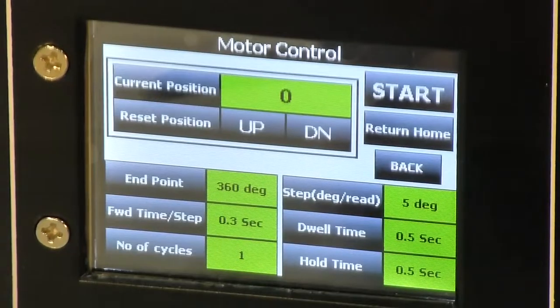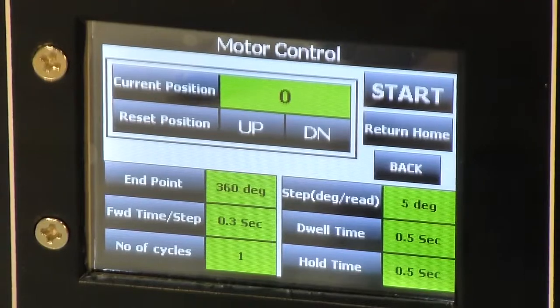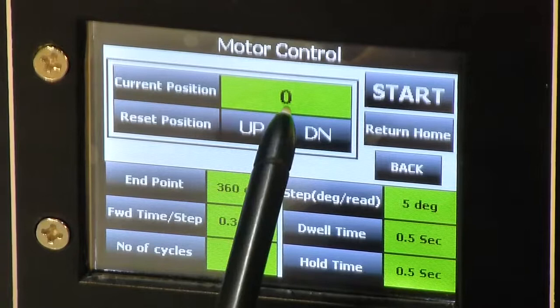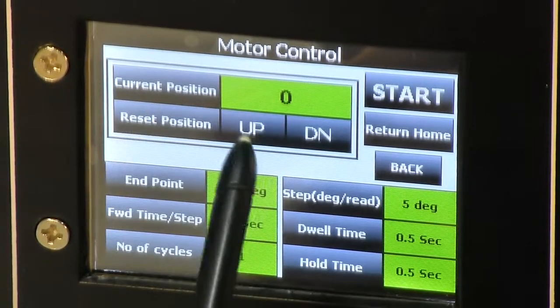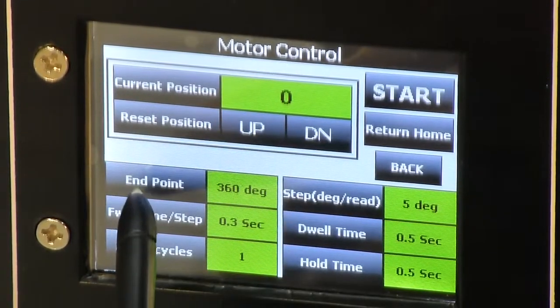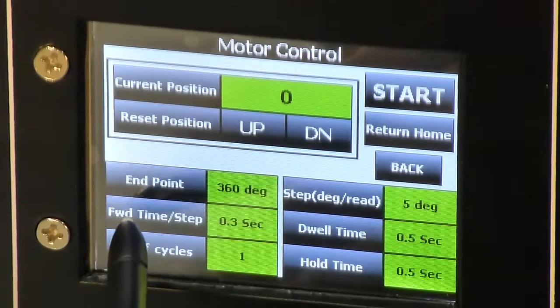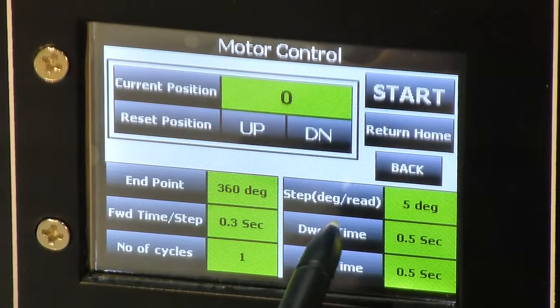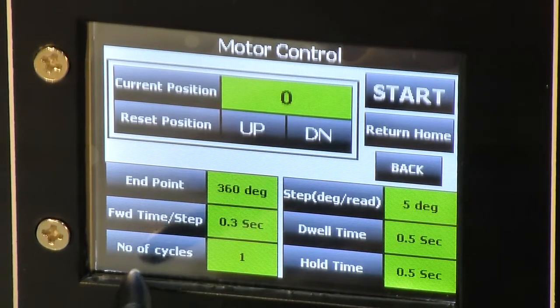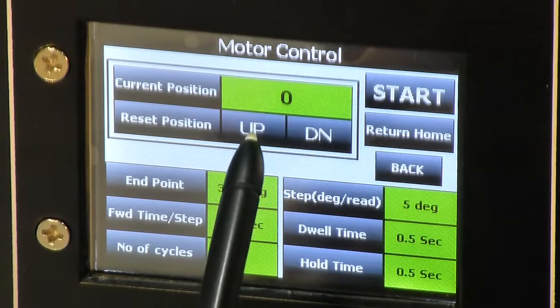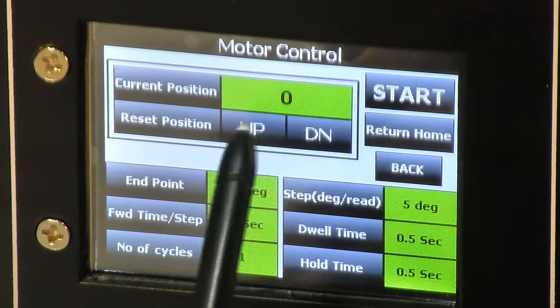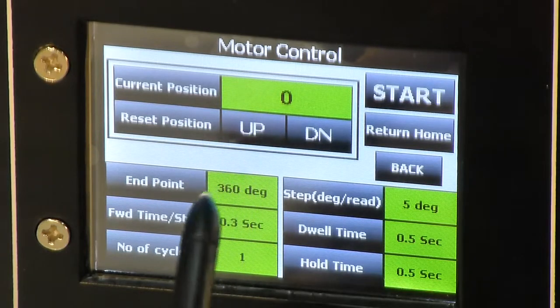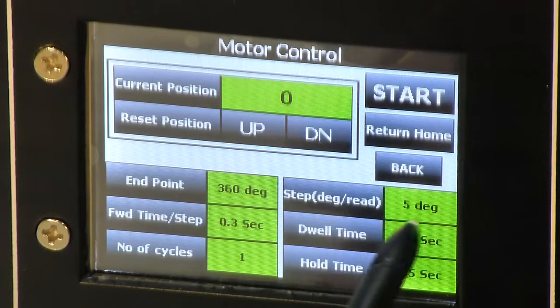And the last feature is stepper motor control. On stepper motor control screen, you can see the current position of the motor, then a reset button, few up and down buttons, end position, step size, time taken for a forward step, dwell time, number of cycles and hold time. You can change the current position of motor using this up and down button. Motor will rotate in clockwise or anticlockwise depending upon the step size.